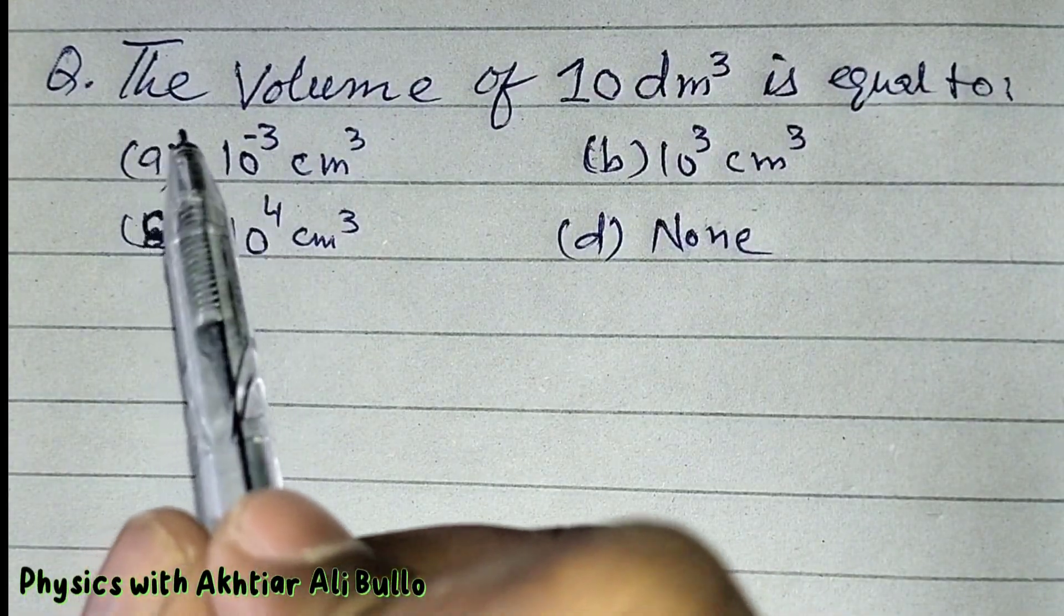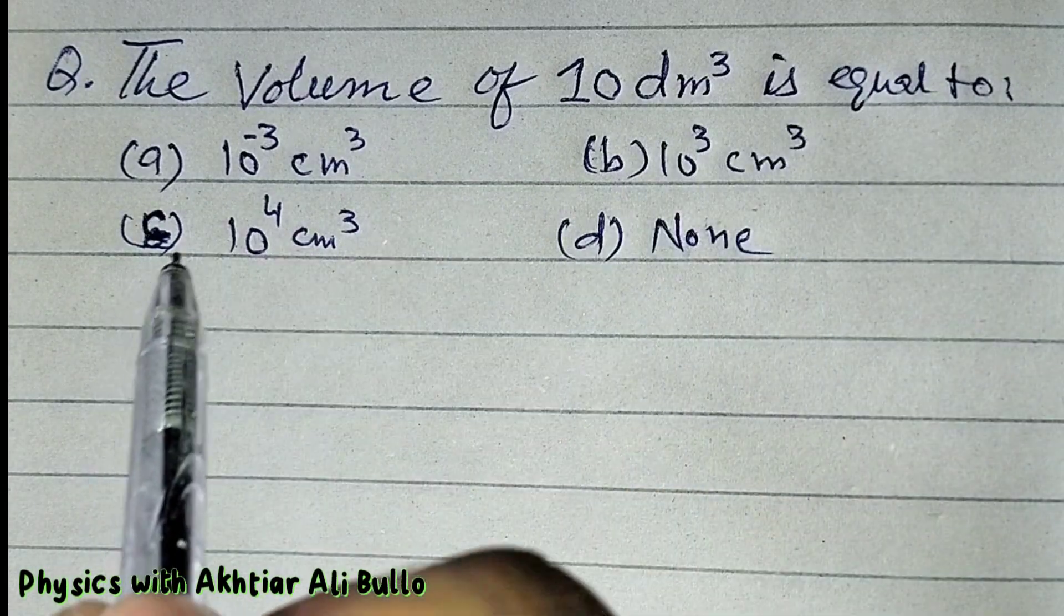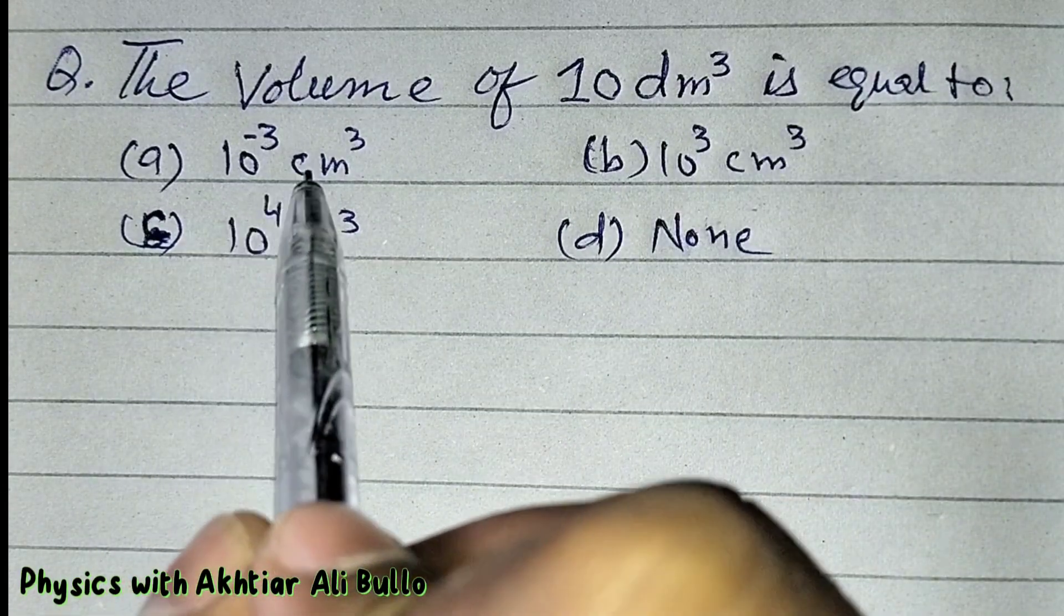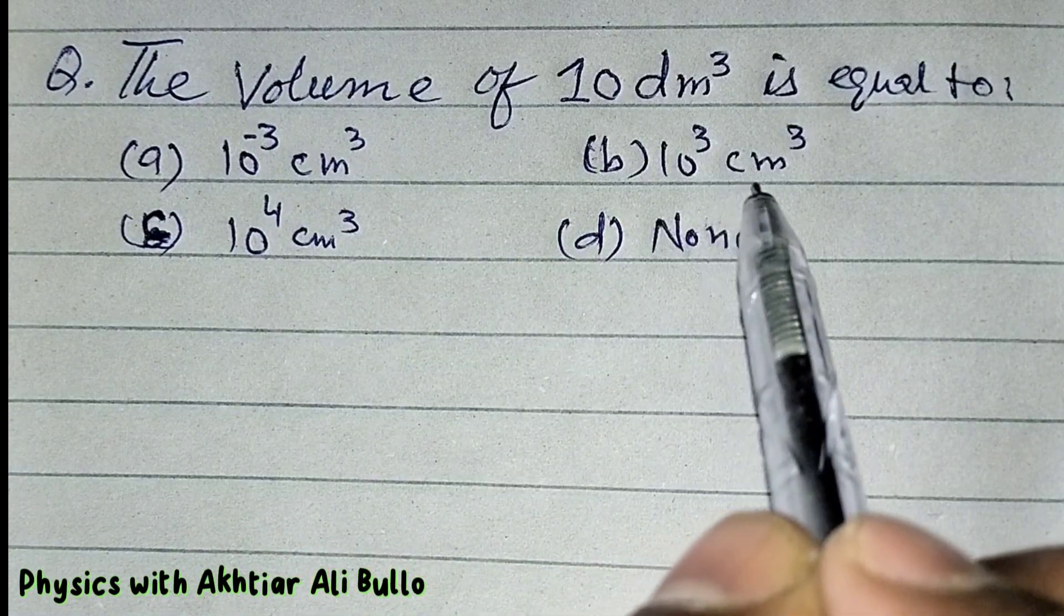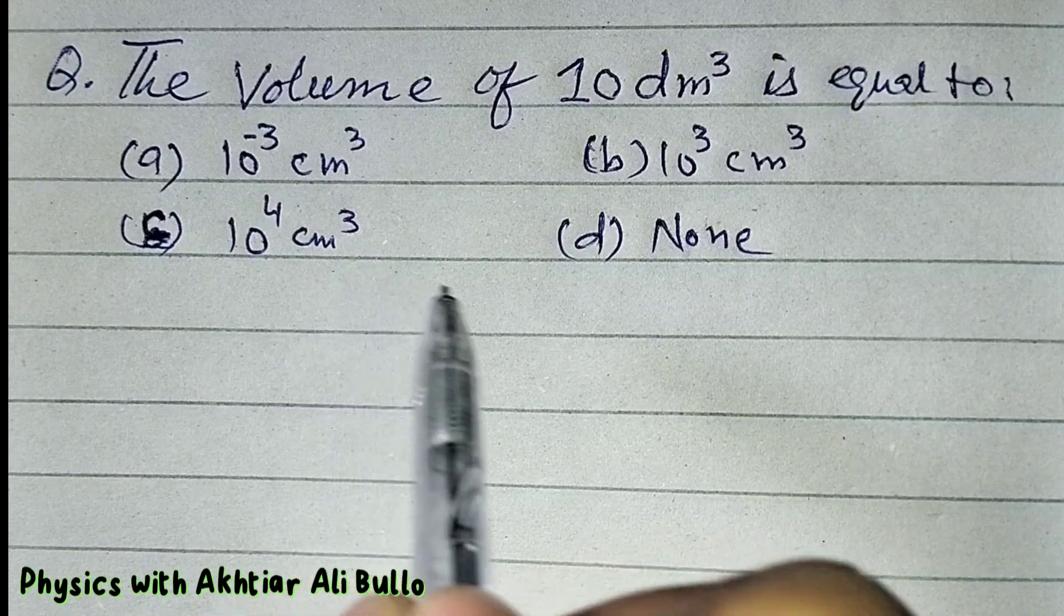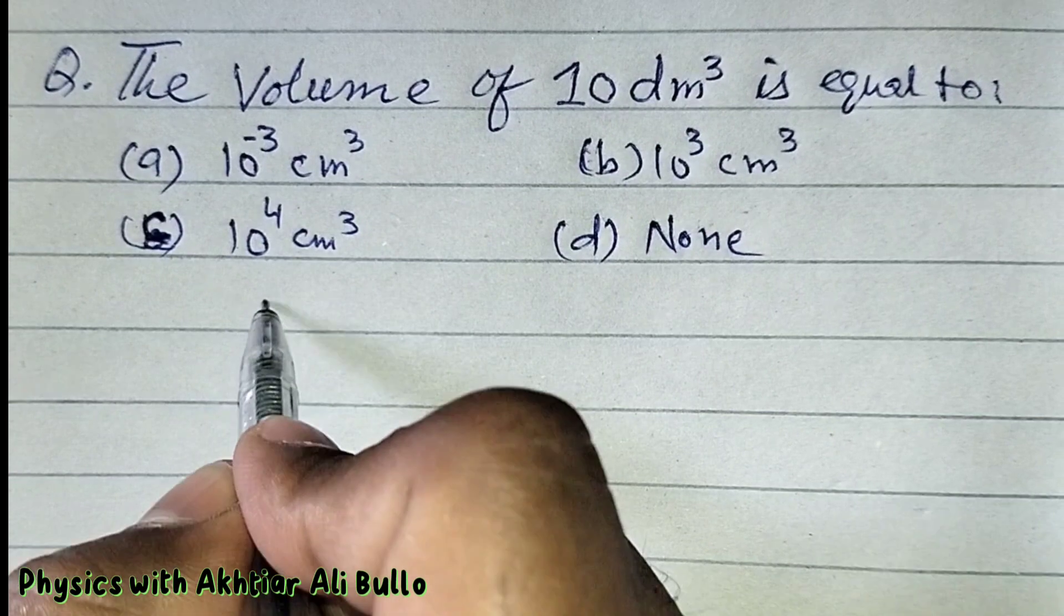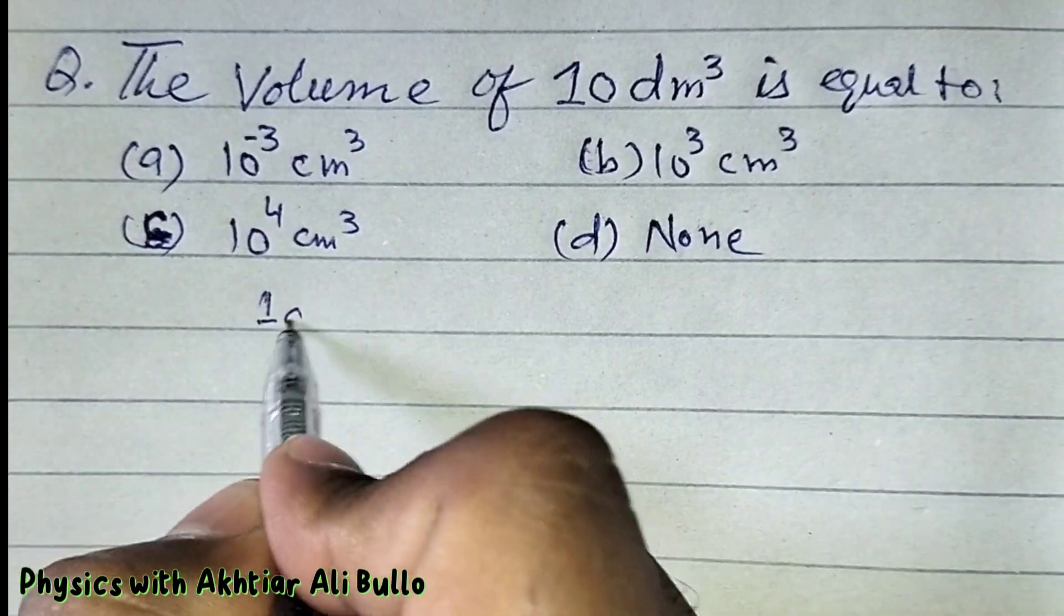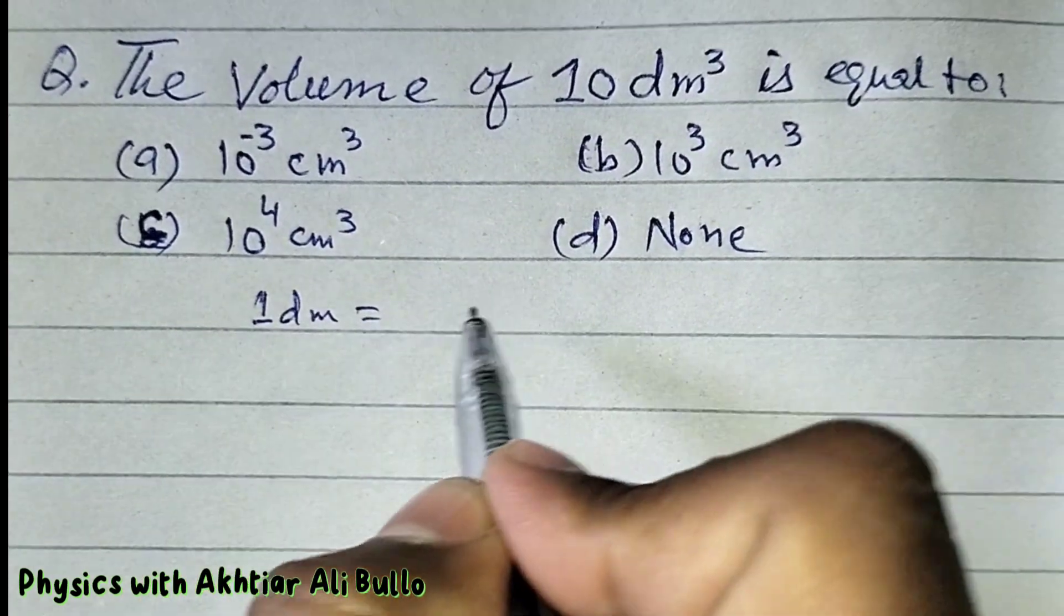The question is: the volume of 10 decimeter cube is equal to: (a) 10 raised power minus 3 centimeter cube, (b) 10 cube centimeter cube, (c) 10 raised power 4 centimeter cube, (d) none. One decimeter is equal to